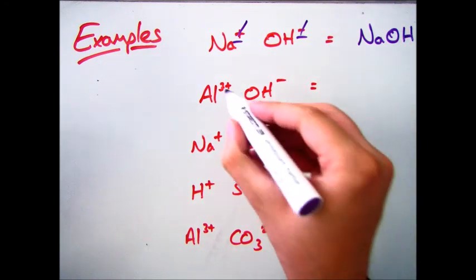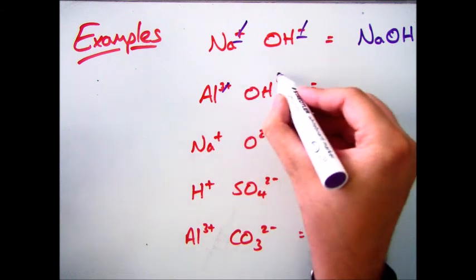The second one, we have Al3+ and OH-, so get rid of the charge, and then take that 3 and move it onto the other side and down below.